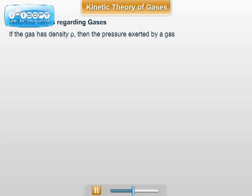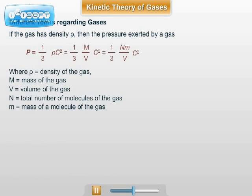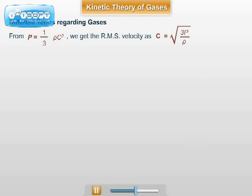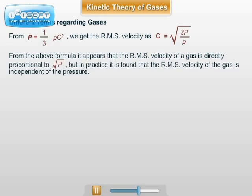The most important formula in the chapter is pressure exerted by the gas. If P is the pressure, ρ is the density of the gas, and C is the RMS velocity of the gas molecules, then P equals one third ρC². From this formula, the RMS velocity can be calculated as under root 3P by ρ. Thus, it appears that RMS velocity is directly proportional to the pressure of the gas.